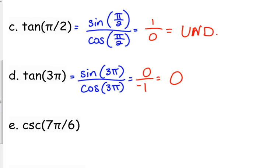What if we're asked about the cosecant? Well, we've just got to recognize that cosecant is the reciprocal of sine. So you should rewrite that as 1 over the sine of 7 pi over 6. Find 7 pi over 6 on your unit circle. That's in the third quadrant.